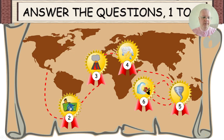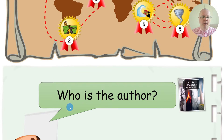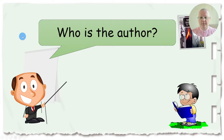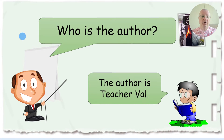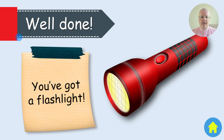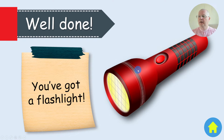Number one disappears, number two: here we go — who is the author of the book? They should be able to say: the author of the book is Teacher Val. You click next and: well done, you've got a flashlight! These items are something extra your students can learn, which I think is a great addition to the lesson.